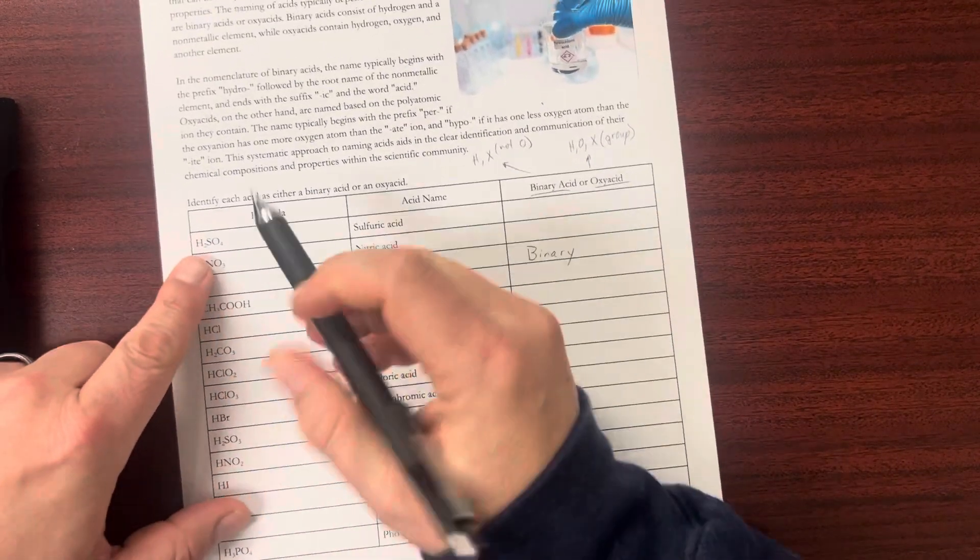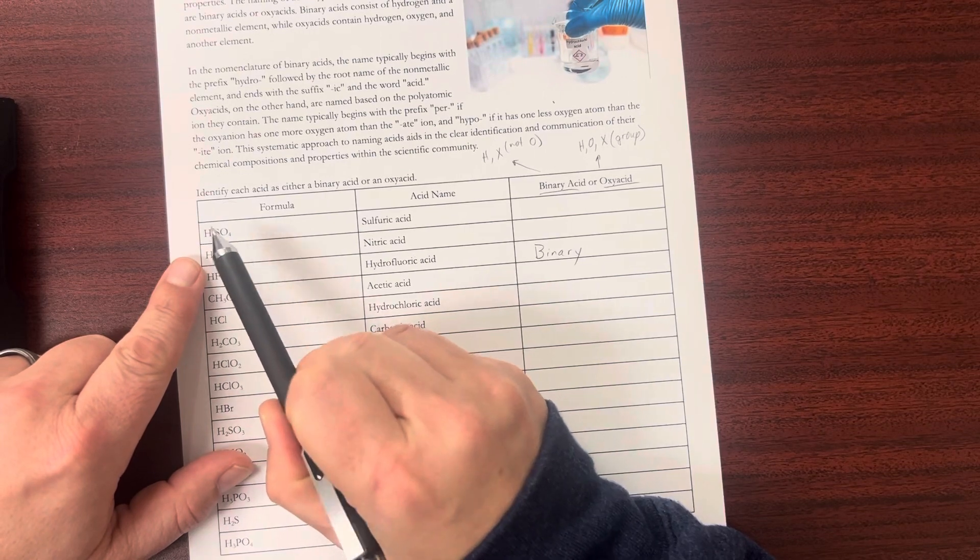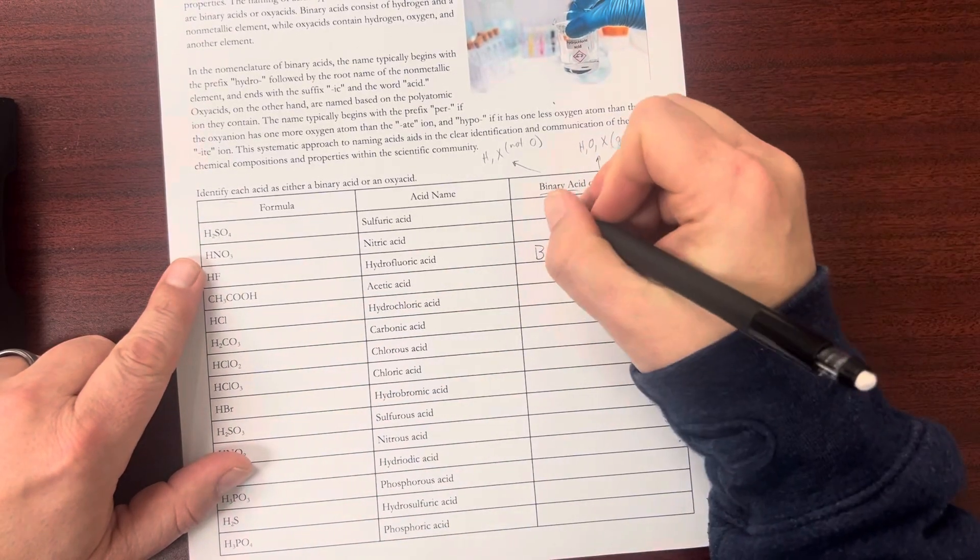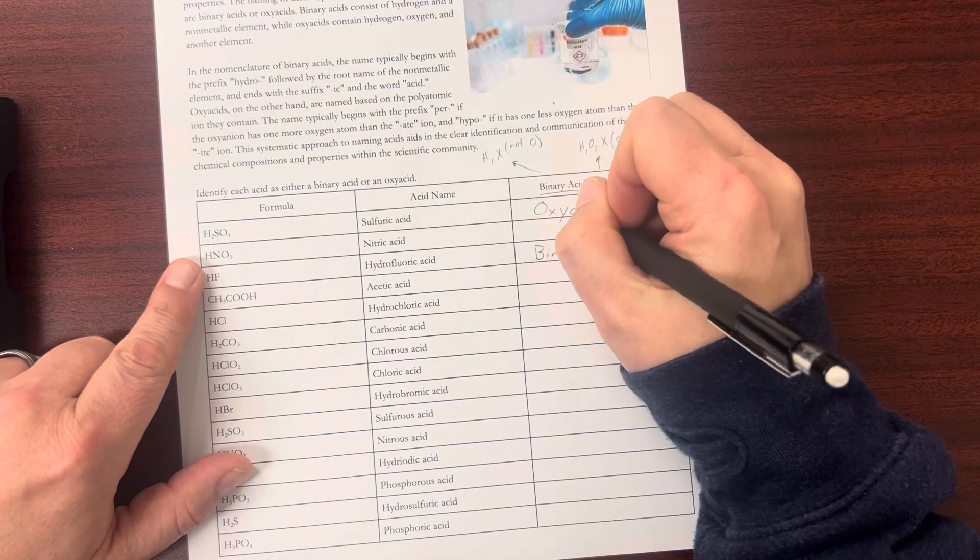If we look at sulfuric acid, it has hydrogen, oxygen, and sulfur. So this one is an oxy acid.